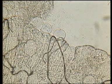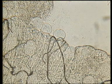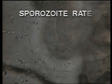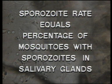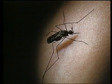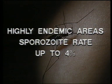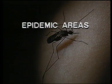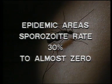If oocysts are found on the wall of the stomach, this only shows that the mosquito is susceptible to infection. To confirm that it is acting as a vector, sporozoites must be found. The sporozoite rate is the percentage of mosquitoes with sporozoites in their salivary glands. It's an important component of epidemiological studies, showing which species are likely to transmit malaria, and is essential for judging the effectiveness of control measures. In highly endemic areas, the sporozoite rate may be up to 4%. In epidemic areas, it may vary between 30% during a severe outbreak to almost zero when there's very little transmission.